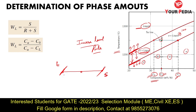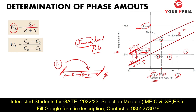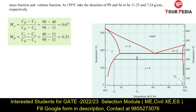This segment is R and this segment is S. To calculate the weight percentage of liquid using the inverse lever rule: liquid is present on the left side, so you take the opposite side — the right side — which is S. Divide S by the total length R plus S. S equals C_alpha minus C₀, and the total equals C_alpha minus C_L. So the weight percentage of liquid = (C_alpha − C₀) / (C_alpha − C_L).